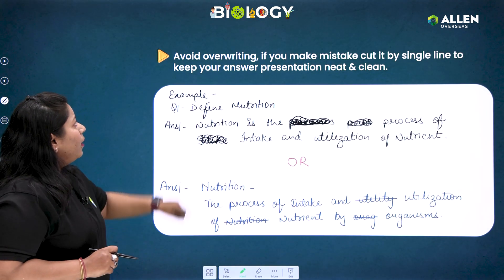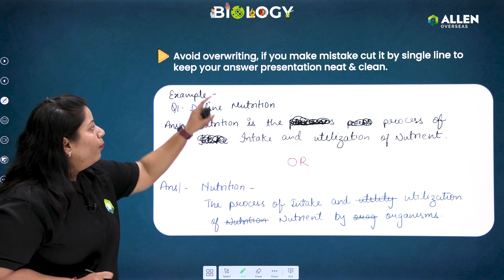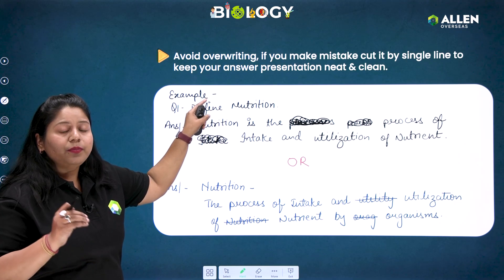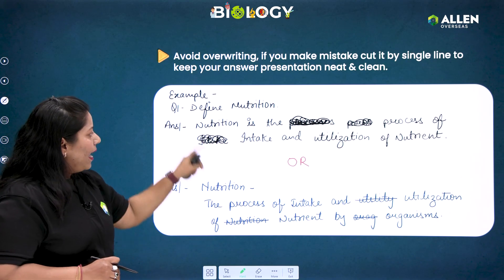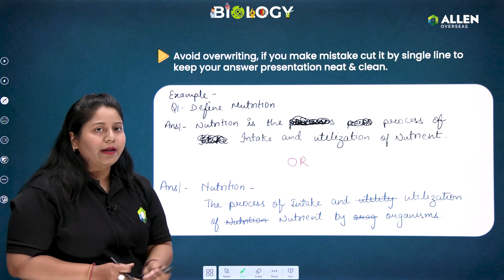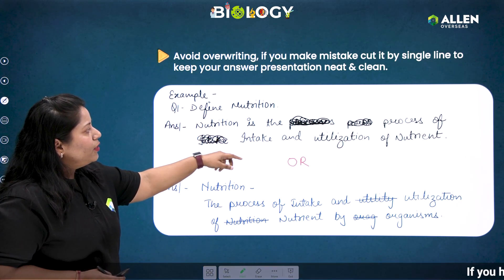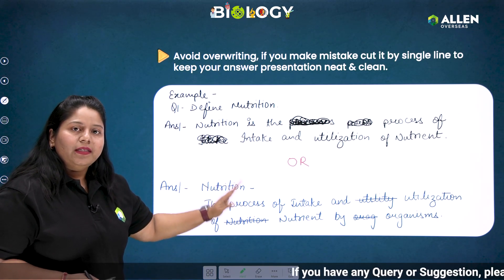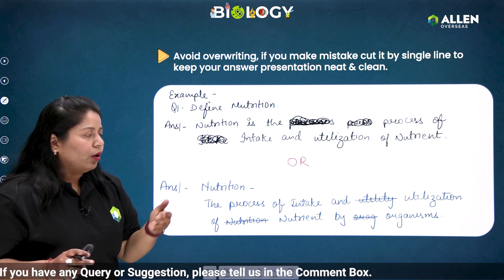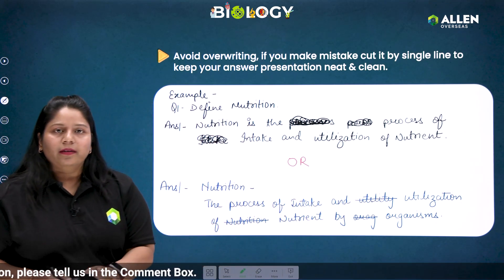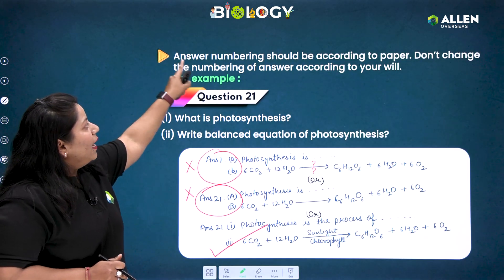Leave a line between every point — leaving a line will improve your presentation. When writing answers, avoid overwriting. If you make a mistake, cut it by a single line to keep your answer presentation neat and clean. For example, take the same question 'define nutrition' — students write answers in two ways. In the first answer, the student highlighted their mistake, but in the second answer, the mistakes are cut by a single line — much better.